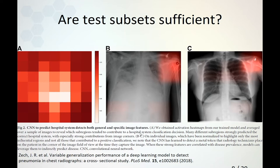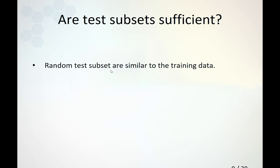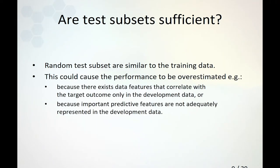When applying the model more generally, it wouldn't perform the same because those features were specific to those centers. So just having a test subset is not sufficient to reliably predict performance in new settings, such as other hospitals. The random test subset is more similar to the training data than completely new data would be. This could cause performance to be overestimated because data features may correlate with the target outcome only in the development data. Both of those cases could have been detected through explainability techniques, but in general that is not always the case — there could be more hidden features that are not easy to detect.